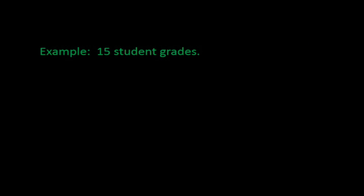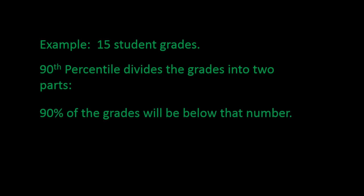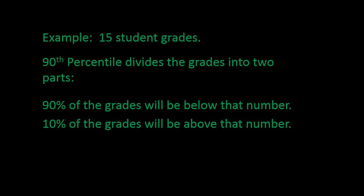So let's say we had a sample of 15 student grades. The 90th percentile would divide the grades into two parts. 90% of the grades would be below that percentile, and 10% of the grades would be above that percentile.